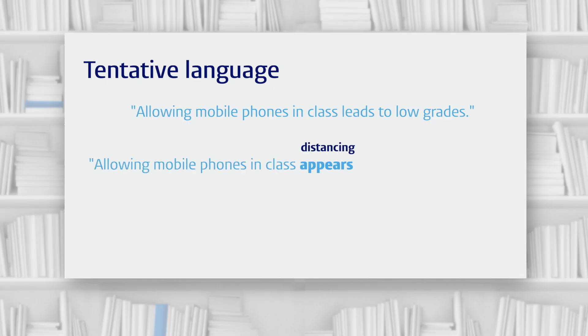Even when we use modals, quantifiers, and qualifiers, we're still presenting the statement as if we believe in it fully. But we can get more flexibility if we distance ourselves from the statement. For example: 'Allowing mobile phones in class appears to lead to low grades.' Now we're only saying that it appears or seems that allowing mobiles in class leads to low grades — in other words, we're allowing for possible evidence in the future that reveals it isn't actually the case.